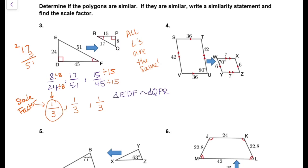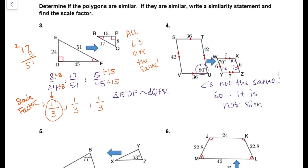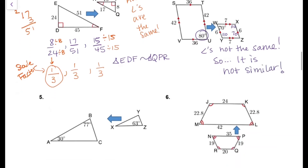On example 4, we have parallel lines on both quadrilaterals. If I take 70 and go across, the other one is 70, but on our first figure it's 80 — so these are not the same. Therefore it is not similar, because all of the angles have to be the same for these two quadrilaterals to be similar.